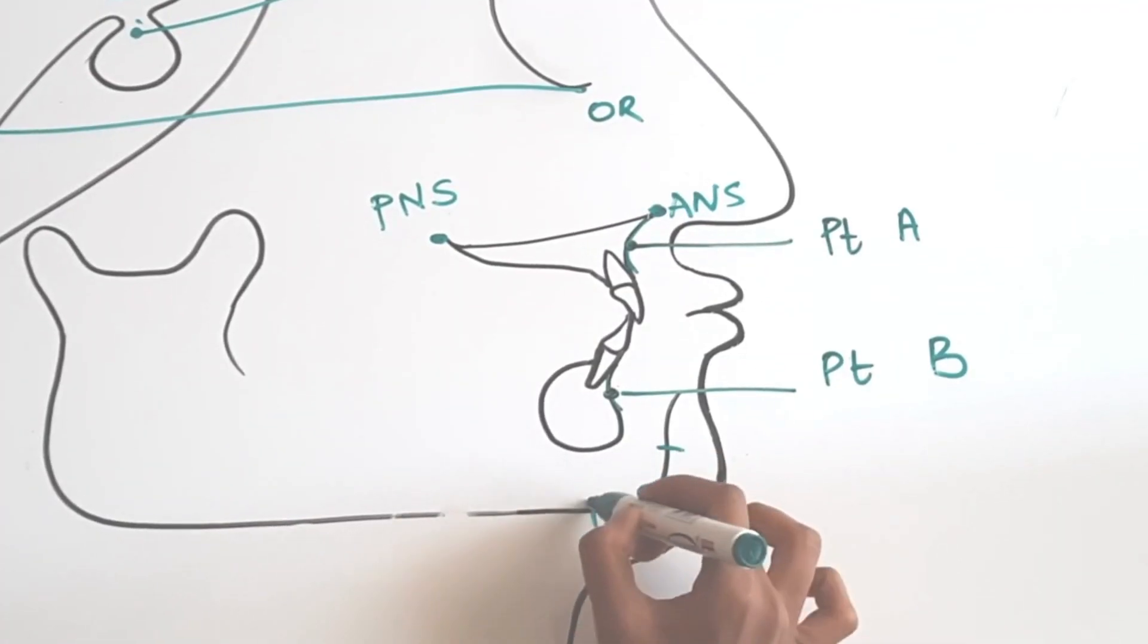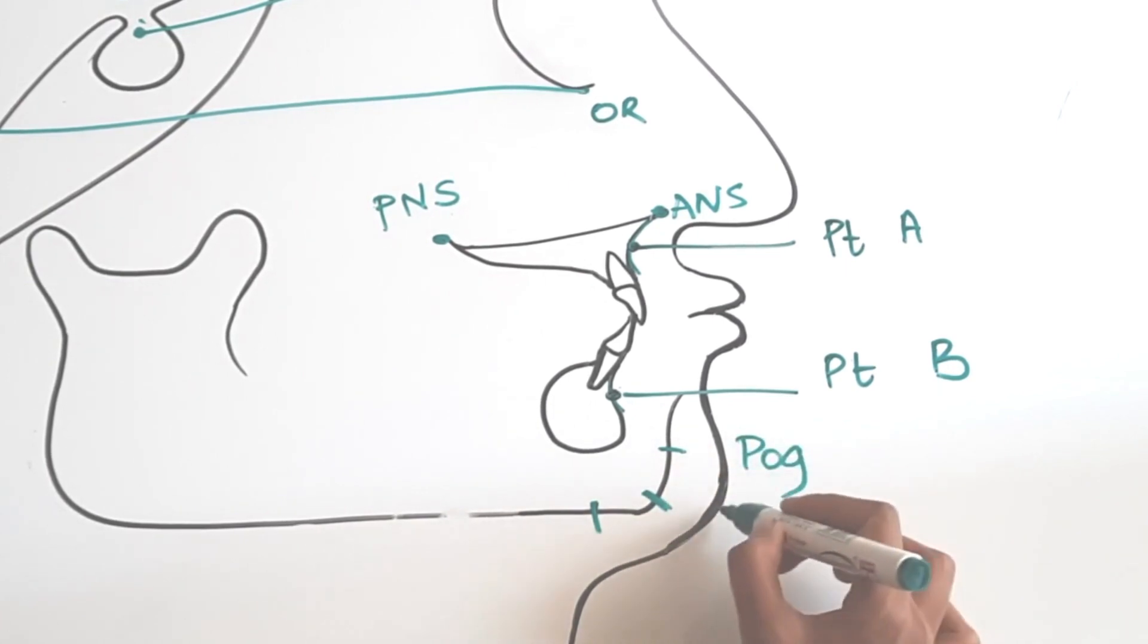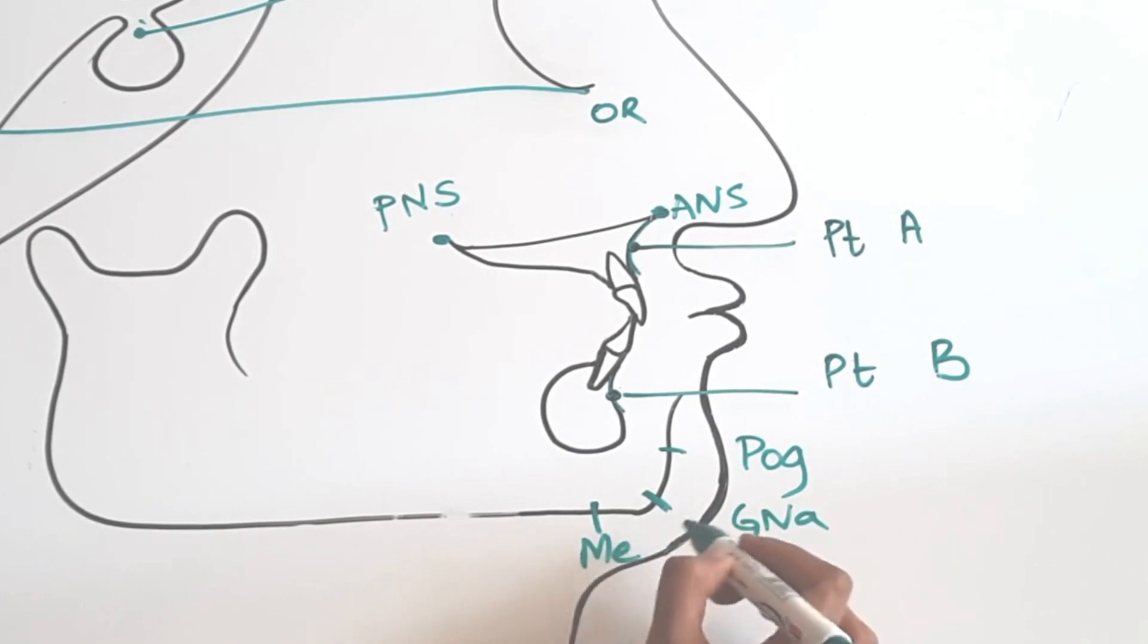Now, let's look at the chin area. Pogonion is the anterior most point. Gnathion is anterior and inferior. It's like midway between pogonion and menton, and menton is the inferior most point on chin.